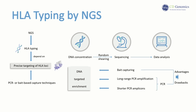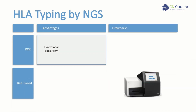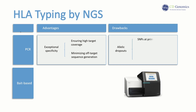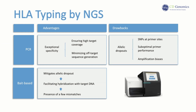Both strategies, whether PCR-based or bait-based, present distinct advantages and drawbacks. PCR exhibits exceptional specificity in targeted enrichment, minimizing off-target sequence generation during NGS procedures while ensuring high-target coverage. Nonetheless, PCR is susceptible to allelic dropouts attributed to factors such as single nucleotide polymorphisms at primer sites, suboptimal primer performance, or amplification biases. In contrast, the bait-based approach mitigates allelic dropout issues by facilitating hybridization with target DNA, even in the presence of a few mismatches between bait and target sequences.